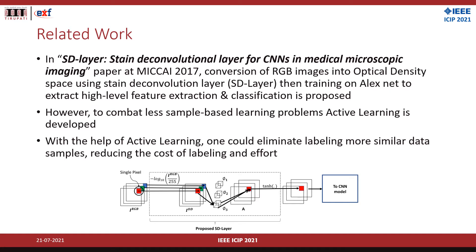In the MICCAI 2017 conference, work on the stain deconvolution layer was proposed, which states that pixel stain quantities offer a fundamental view of the interaction between tissues and stain chemicals. The SD layer converts the image from the RGB domain to the optical density domain based on the staining process, which provides a different set of features to the model. We have used the SD layer as one of our shallow feature inputs to provide more information on the optical density space along with the RGB space.